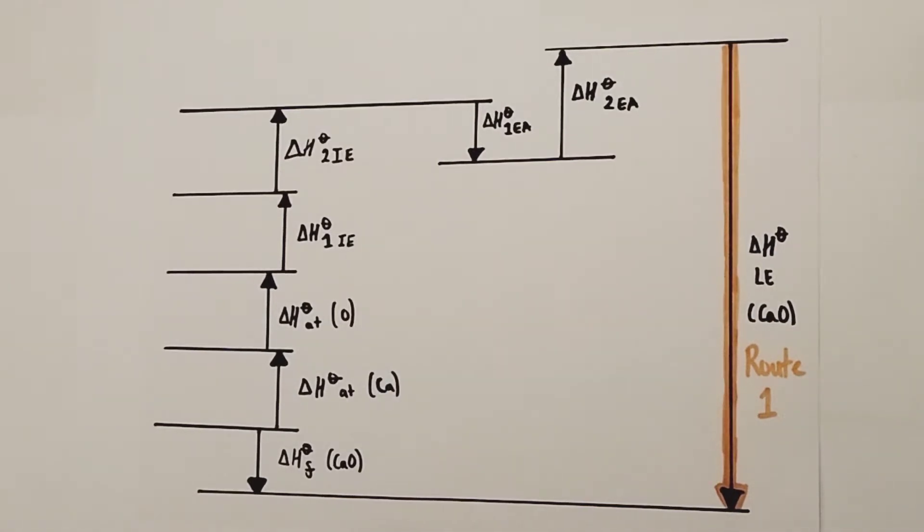The first thing I'm going to show you is how to complete this Born-Haber Cycle by filling in equations on each of the lines for the various enthalpy changes taking place, then I'll show you how to calculate the missing lattice enthalpy for Calcium Oxide.